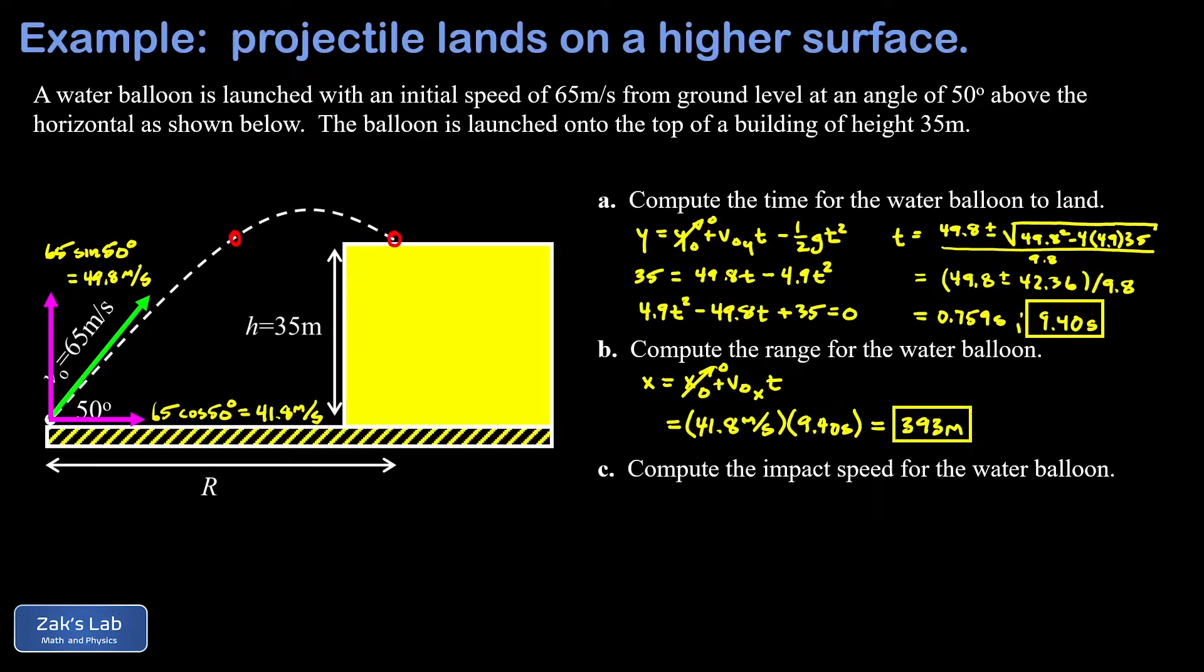Finally, in part C, I want to get the impact speed for the water balloon. So we need to look at the final velocity components when this thing hits the top of the building. Well, the x component is the simple part because that never changes in a projectile flight. So we can just translate that constant x velocity over to the landing point. It's still going to be 41.8 meters per second when this balloon lands.